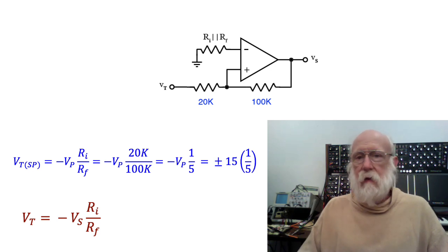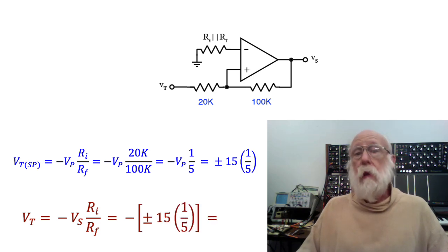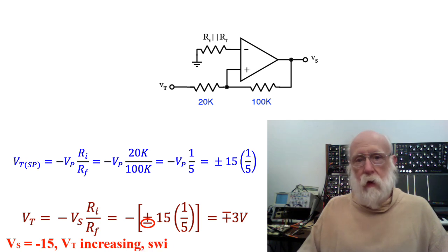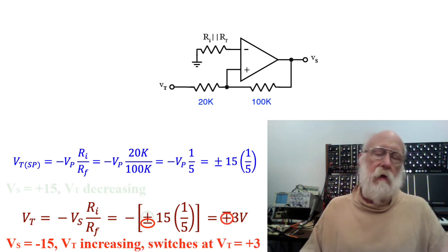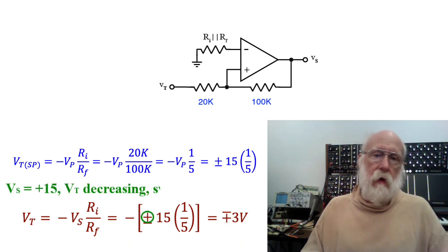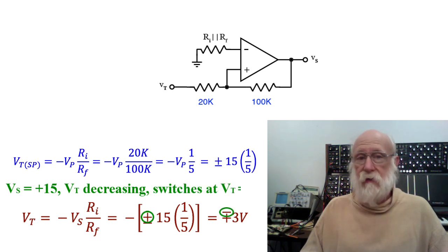We've already seen that that ratio is one-fifth, so we've got minus, either plus or minus 15 times one-fifth, which gives us plus or minus 3 volts as our two switch points. So when it's coming up from below, the output will go high at 3 volts. When it's going back down, the output will go low when it reaches minus 3 volts.